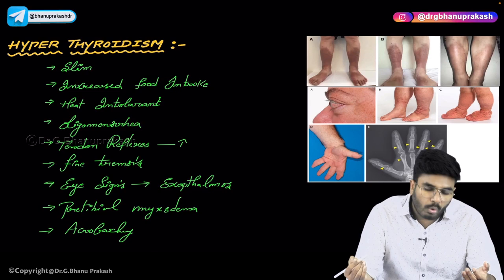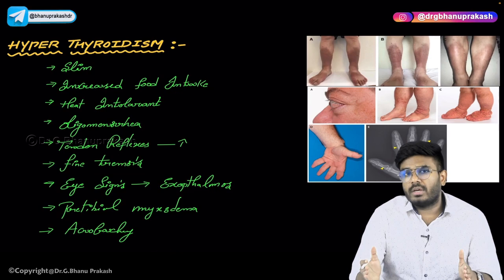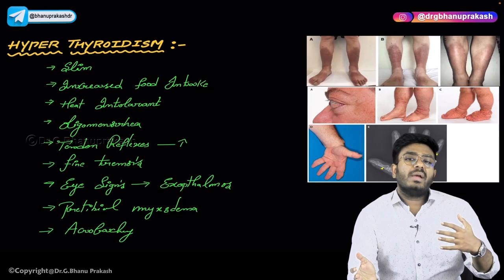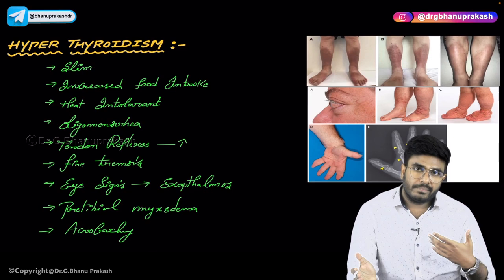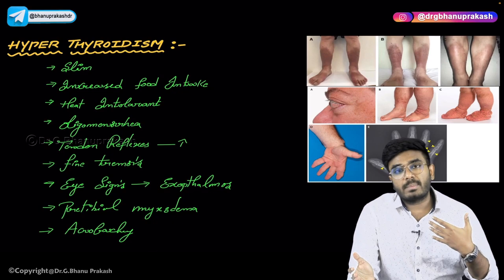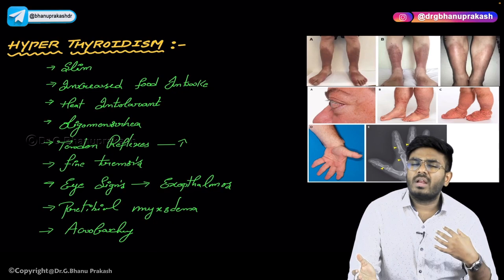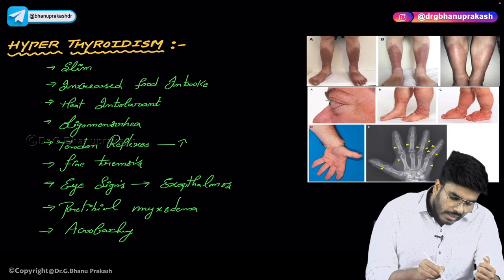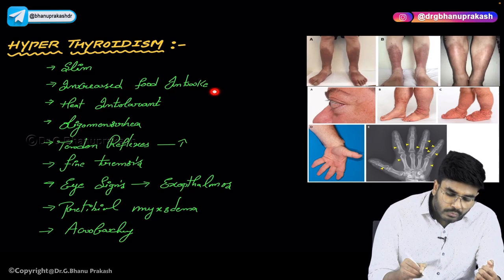Why is he taking more food? Thyroid hormones are catabolic and increase the basal metabolic rate. If I am a person with hyperthyroidism, I have a lot of T3 and T4, which increases my BMR. So I need more calories to maintain homeostasis over 24 hours — meaning I must take more food. Therefore, in hyperthyroidism, there will be increased food intake.